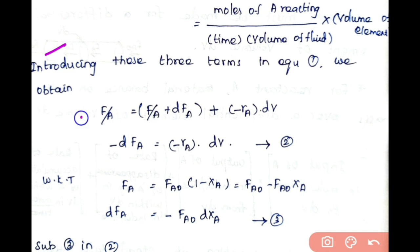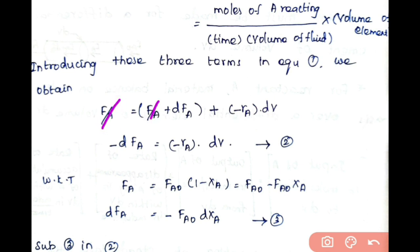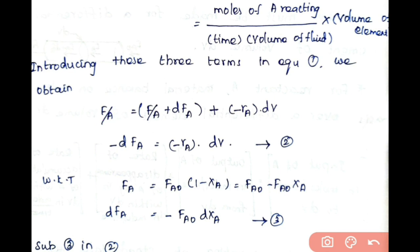Substituting input, output, and disappearance into Equation 1: FA = (FA + dFA) + (−rA)·dV. Cancelling FA from both sides gives −dFA = −rA·dV. This is Equation 2.